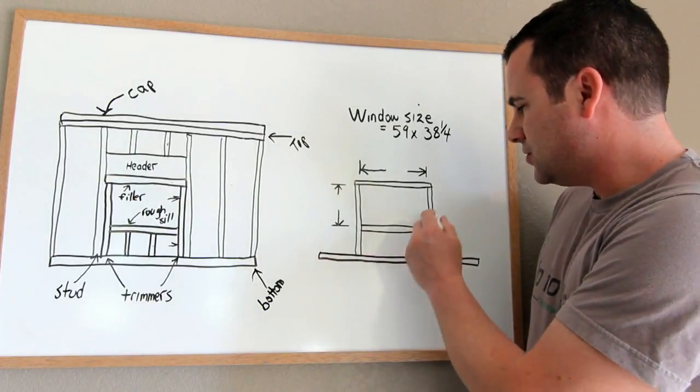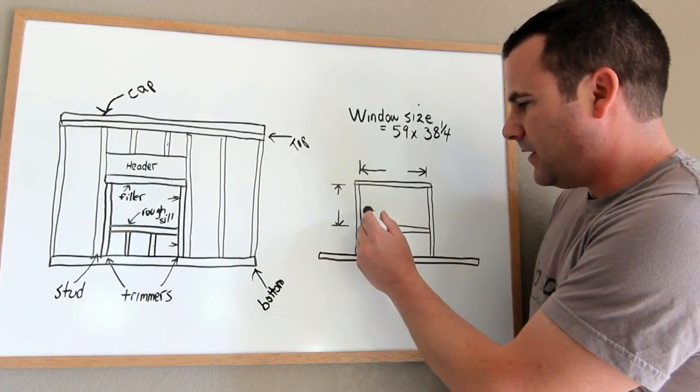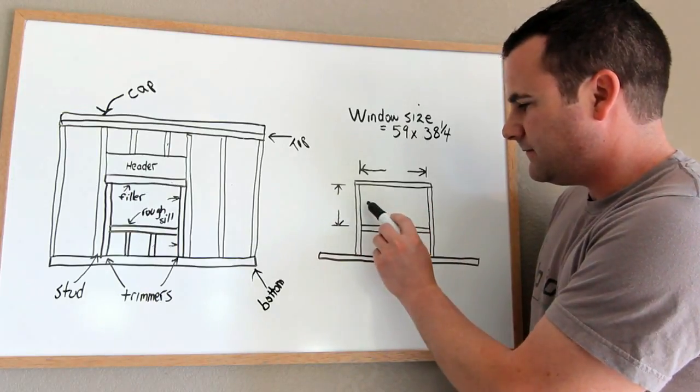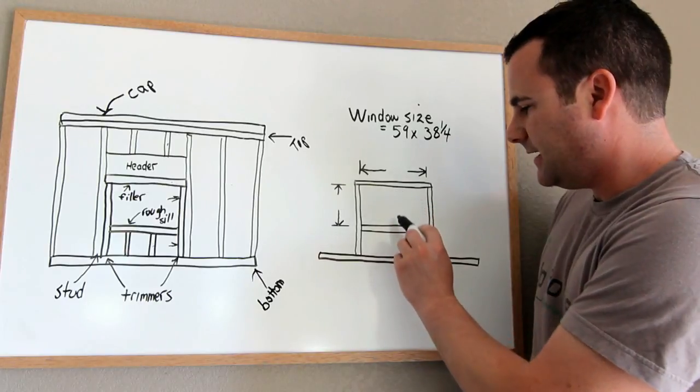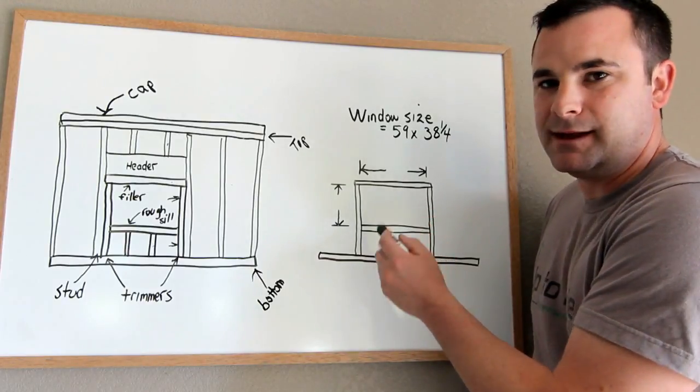I just drew it simple, but the rough opening is just when you measure the inside of the framing members, so basically the clear opening.